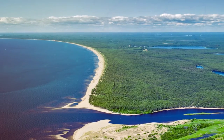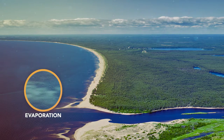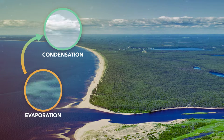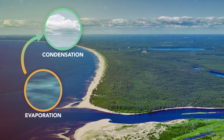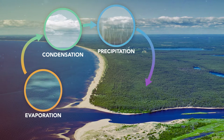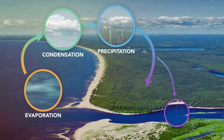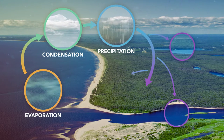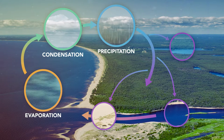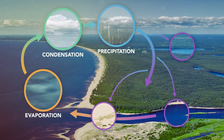The water cycle describes how water evaporates from the surface of the Earth, rises into the atmosphere, cools and condenses into rain or snow and clouds, and falls again to the surface as precipitation. The water falling on land collects in rivers, lakes, soil, and porous layers of rock. Much of the water flows back into the oceans where it will once more evaporate.